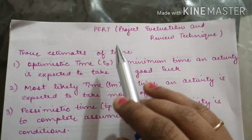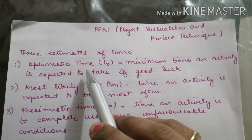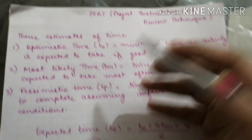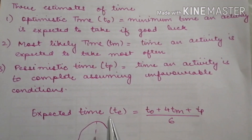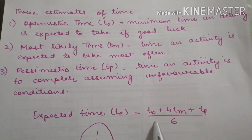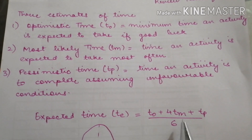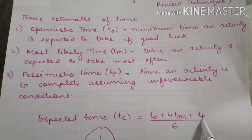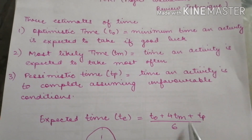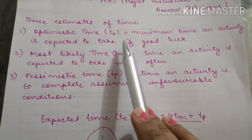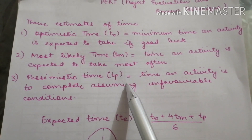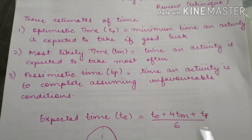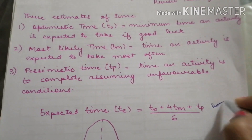Whenever we deal with PERT problems, we will have three types of time period: optimistic time, most likely time, and pessimistic time. The formula to calculate the expected time period is: optimistic time plus 4 into most likely time plus pessimistic time, divided by 6. When given these three time periods in a problem, you need to calculate the expected time using this formula. Always remember this formula.